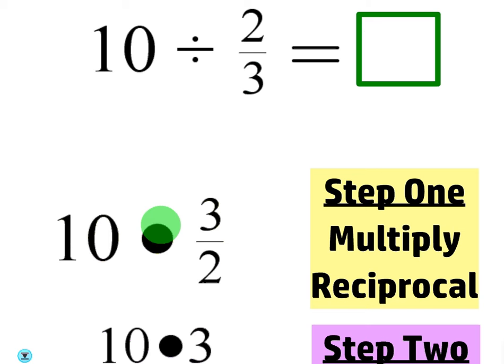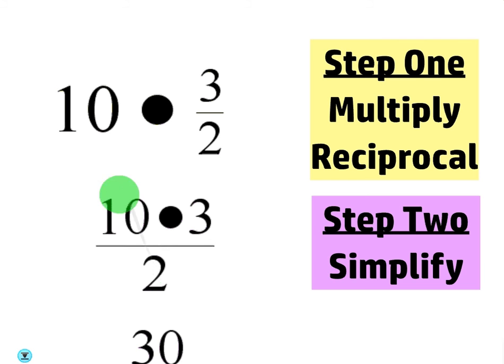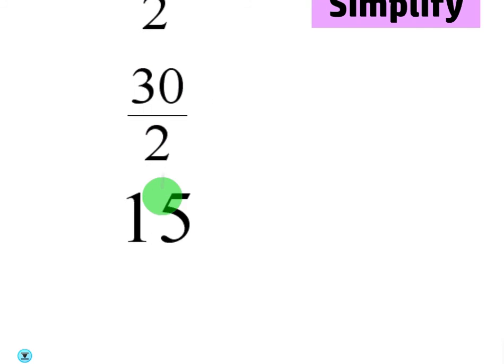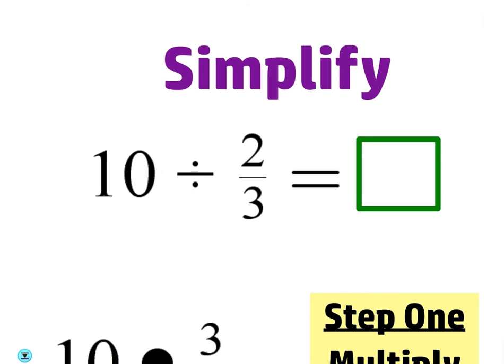So step one, if you want to write it down, if it helps you, multiply by the reciprocal. Again, notice the ten does not change. Now, this is kind of why this is almost review, because once you do step one, we've already learned how to multiply an integer by a fraction. So let me ask you guys, do you multiply the ten by the two or the ten by the three? By the three. The number on top. So you get ten times three over two, and yes, you can cancel that. That would become five. Five times three is fifteen. But if you do it the long way, ten times three is thirty on the top. Thirty divided by two is fifteen. So the final answer is fifteen.